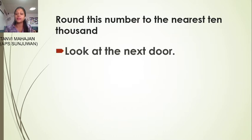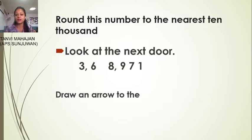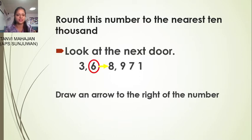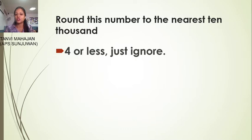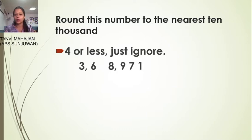Six stands in the ten thousands place. So look at the next door — that is the second line of the poem. Which number is next door to the six? Draw an arrow to the right of that number. Eight is next door. So remember the third line of the poem: four or less, just ignore? No — in 368,971, six is in the ten thousands place and its next door number is eight.